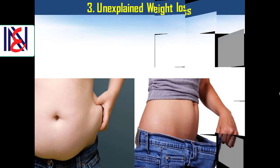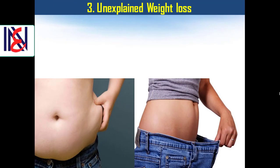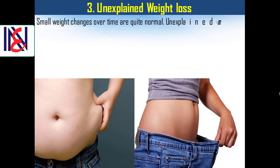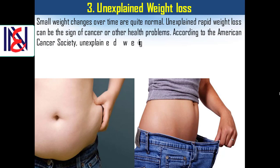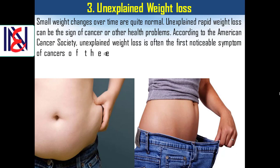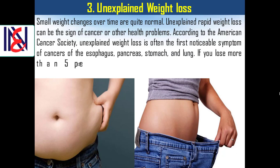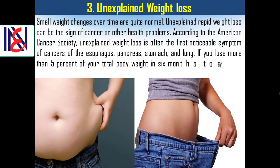3. Unexplained weight loss. Small weight changes over time are quite normal. Unexplained rapid weight loss can be a sign of cancer or other health problems. According to the American Cancer Society, unexplained weight loss is often the first noticeable symptom of cancers of the esophagus, pancreas, stomach, and lung. If you lose more than 5% of your total body weight in 6 months to a year, tell your doctor.